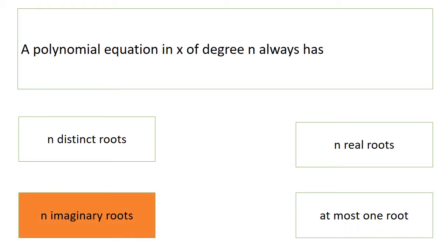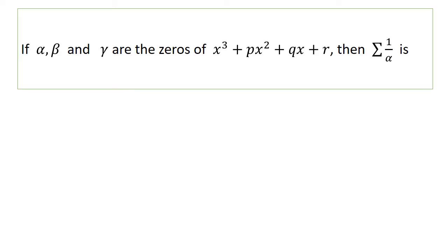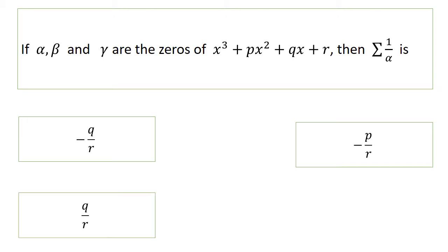The fourth question: if α, β, and γ are the zeros of x³ + px² + qx + r, then Σ(1/α) is: -q/r, -p/r, q/r, or -q/p.